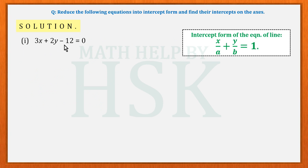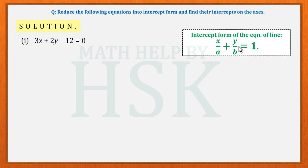To solve this, we have to convert each equation into intercept form. The standard intercept form of the equation of a line is x/a + y/b = 1, where the variable terms x and y are on the left-hand side and the constant term 1 is on the right-hand side.